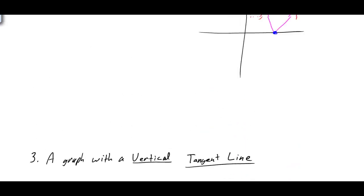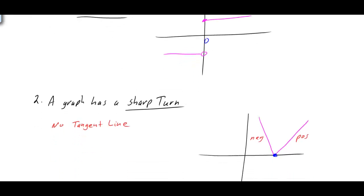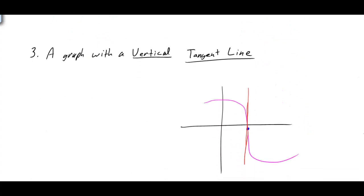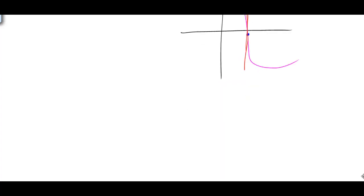The three places you want to be concerned with your derivative not existing: first, if you have a discontinuity — a break in the graph; second, if your graph has a sharp turn, which is a sharp V shape, so your derivative does not exist at that point; and third, if your tangent line is vertical, because therefore it is undefined.